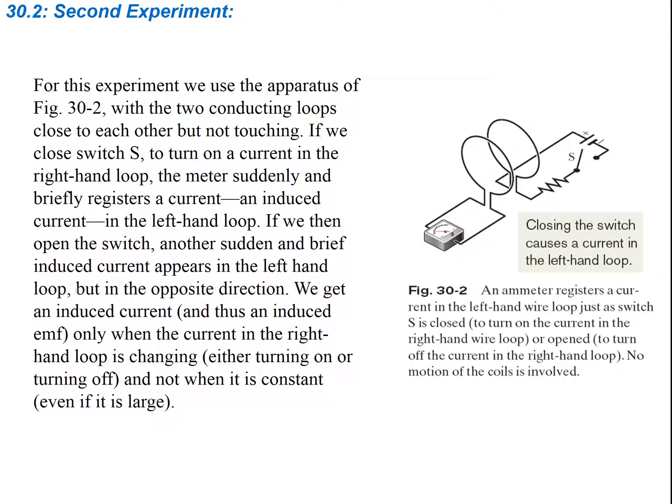We need a change in flux to create this EMF source. If the magnetic field is constant, you're not going to have an induced EMF. But if you have the magnetic field or the current in the first loop changing, then you're going to get an induced EMF in the other one.